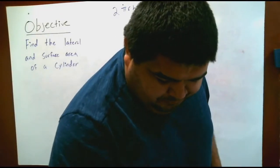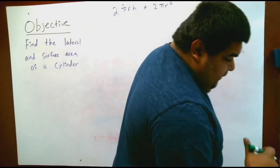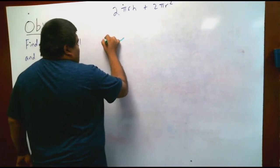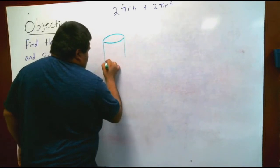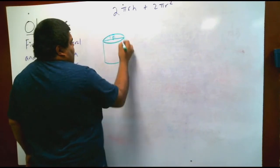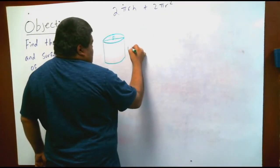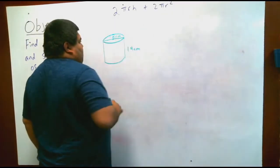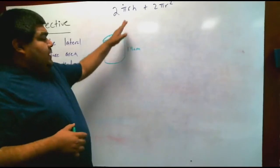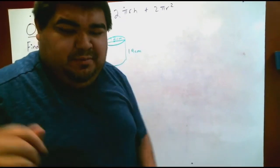Let's get started on today's concept. For the first example, we have a cylinder with a diameter of 12 and a height of 14, all in centimeters.